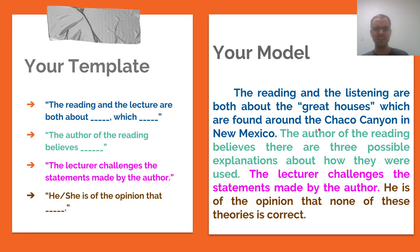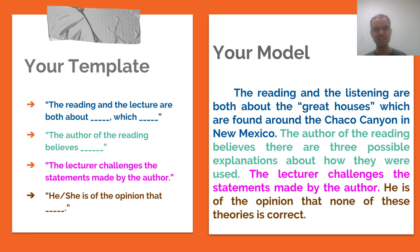For an argument essay you'd say something like: 'The reading and the listening are both about the Vikings, which are a people that came from Scandinavia. The author of the reading believes that the Vikings were the first Europeans to visit North America. The lecturer challenges the statements made by the author. He is of the opinion that the Vikings were not the first Europeans to visit North America.' For a problem and solution essay: 'The reading and the listening are both about using bacteria to clean up oil spills. The author of the reading believes that there are three problems with this technique. The lecturer challenges the statements made by the author. He is of the opinion that bacteria is a great way to clean up oil spills.' You see — it works no matter what kind of question you get.